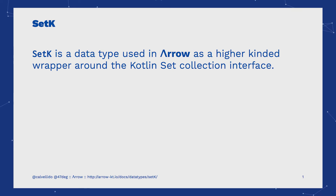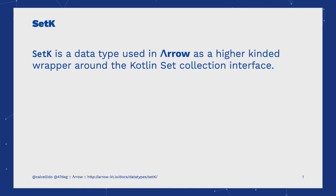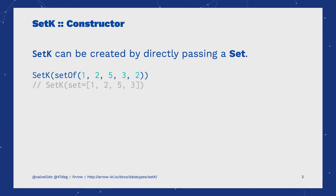SetK is a data type belonging to the wrappers category. These types wrap some of Kotlin's collections and functions to give them capabilities that are related to the type classes provided by Arrow. A SetK can be initialized through a classic constructor which expects a Set collection.